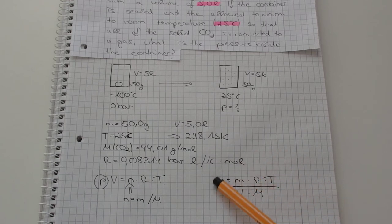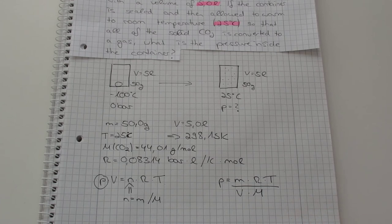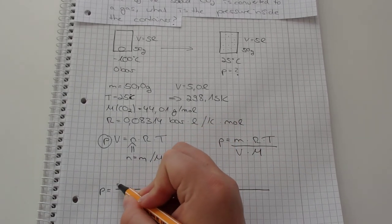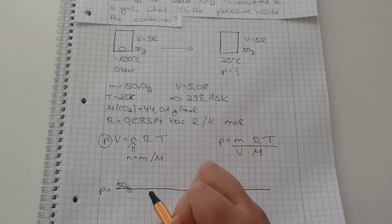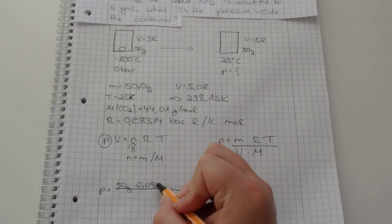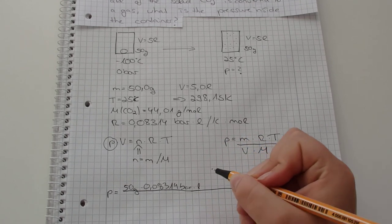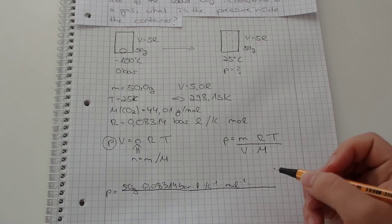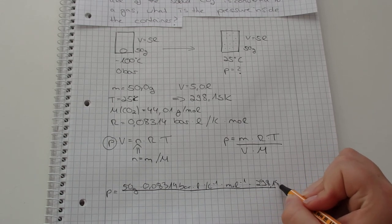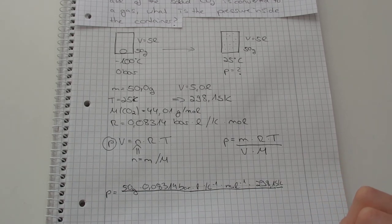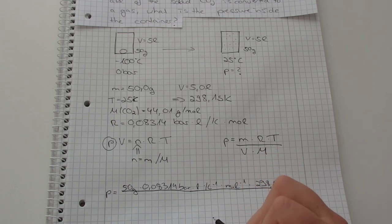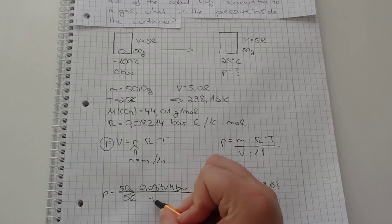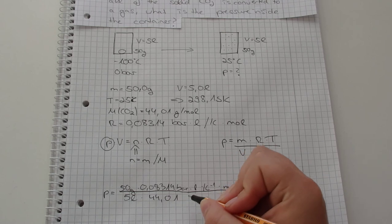And then we have the pressure from this formula. We have 50 grams multiplied by the gas constant, multiplied by the temperature, and that's divided by the volume of 5 liters and the molar mass 44.01 grams per mole.